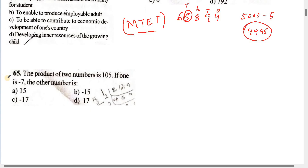Question number 65: The product of two numbers is 105. If one number is minus 7, then what is the other number?